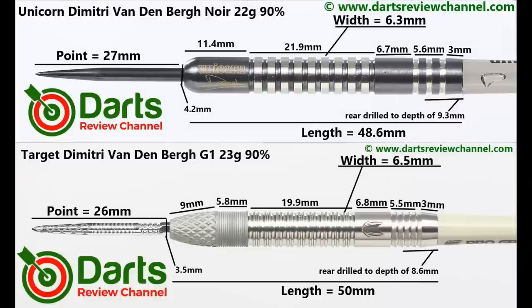So in case you're interested, these are the comparison to the 22g Unicorn Noir version Dimitri Vandenberg Gen 1 darts.